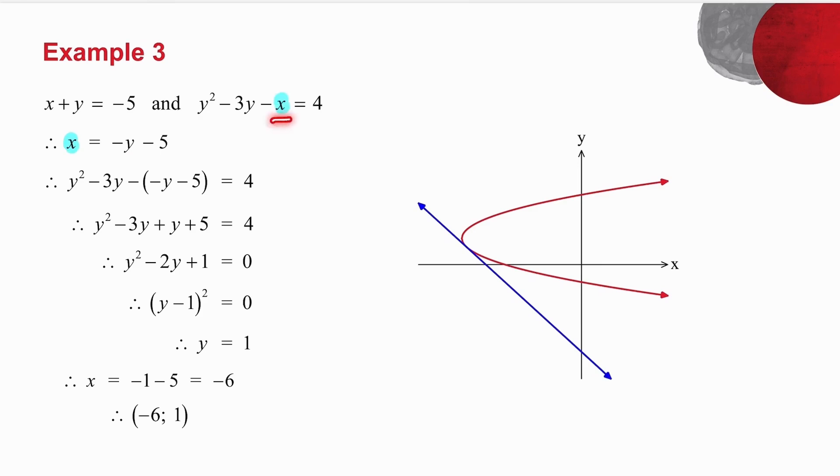Now this x is the same as that x. So in place of x, I'm going to put minus y minus 5. And I get that. Multiply the bracket, set up your trinomial, which you factorize, and solve for y.